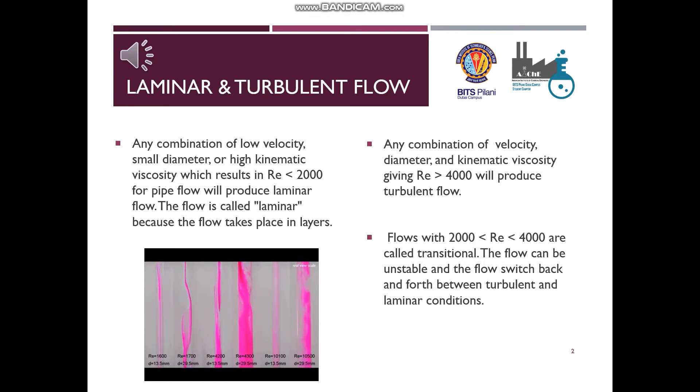Any combination of velocity, diameter, or kinematic viscosity giving Reynolds numbers greater than 4,000 will produce turbulent flow. Flows with Reynolds numbers between 2,000 and 4,000 are called transitional. The flow can be unstable and the flow switches back and forth between turbulent and laminar conditions.